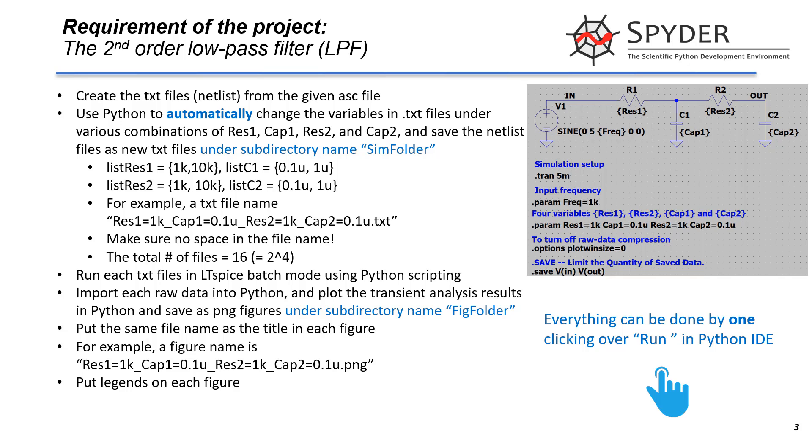The program you made will create LTspice netlist in text files, run LTspice simulation in batch mode in the background, read raw data into Python, plot the data and save as image files. Remember, everything is fully automatic.